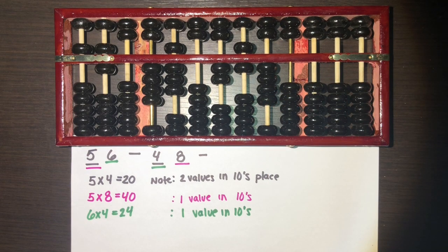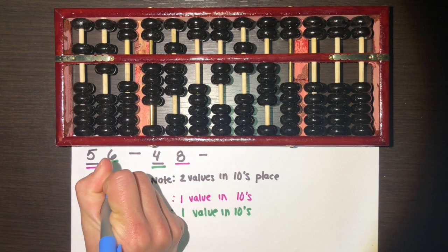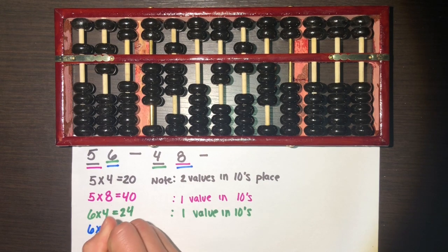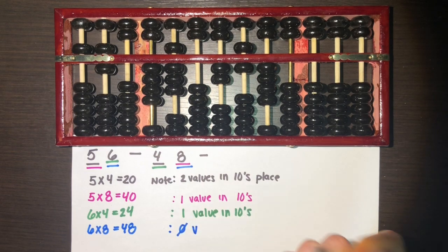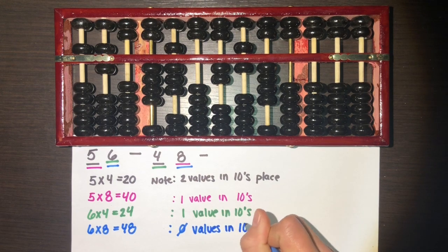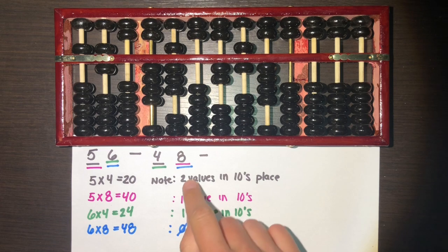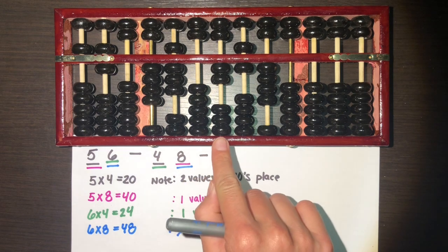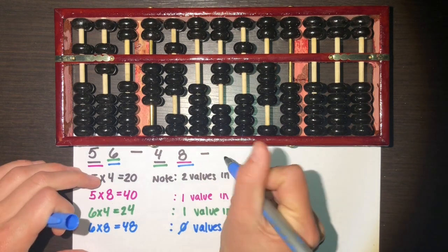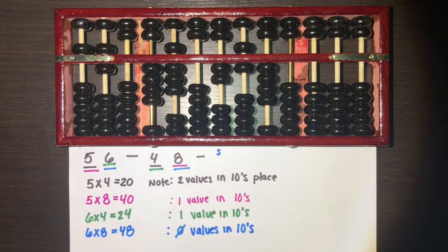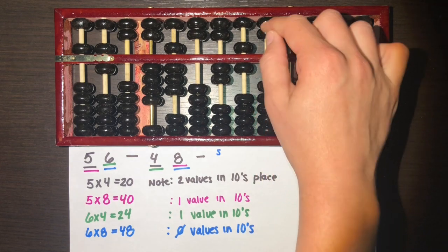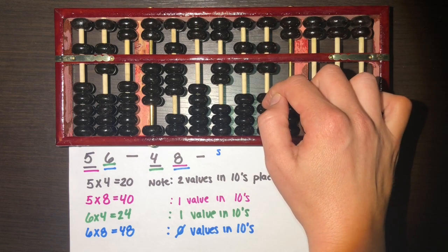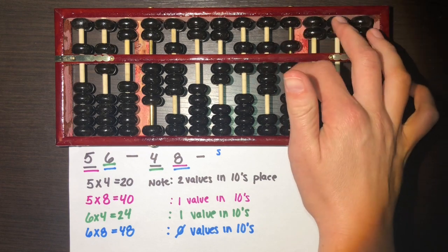For the final step in this multiplication, we do six times eight, which equals 48. This time we have zero values in the tens. Since the difference between this and our original starting spot is two, we start two spots to the right. Going one, two to the right of our starting spot, we add 48: adding 10, then carrying as needed, and then eight ones.